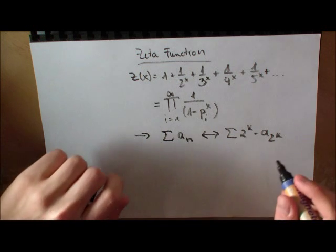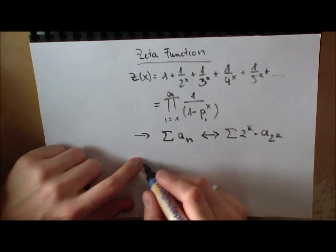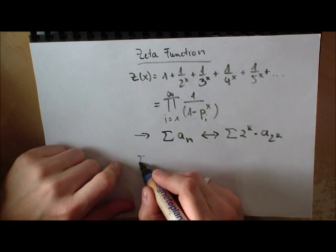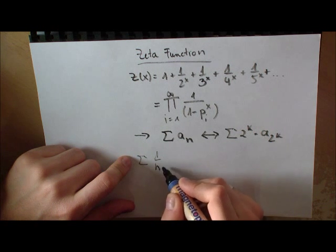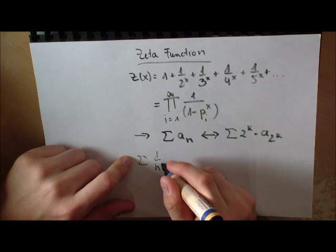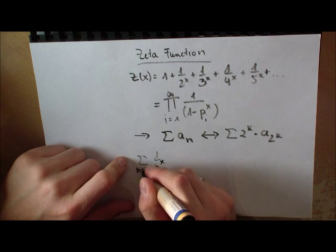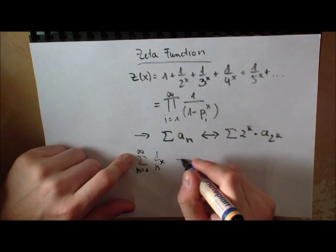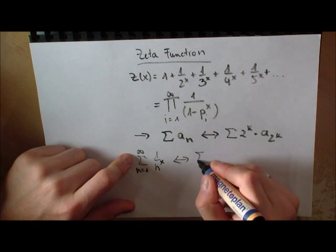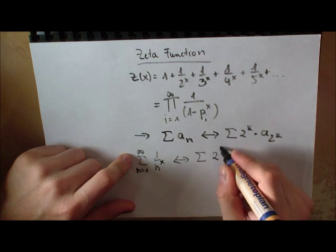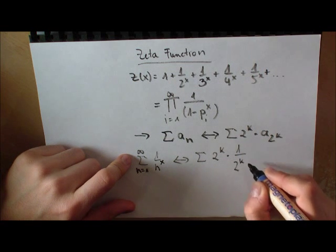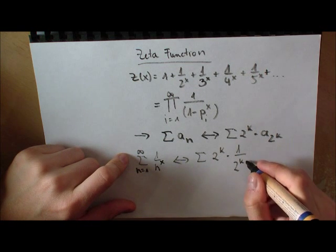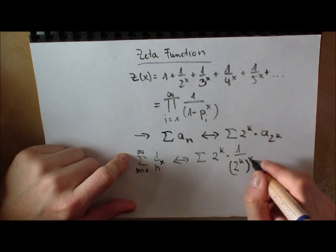If we do this step on the zeta function, which looks like sum from n equals 1 to infinity of 1 over n to the x, then this is equal to looking at sum of 2 to the k times 1 over 2 to the k to the x.